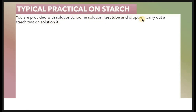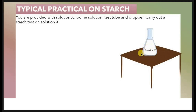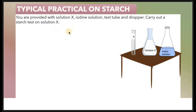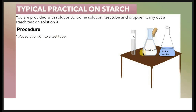In a typical practical on starch, you are provided with solution X, iodine solution, a test tube, and a dropper, and asked to carry out a starch test on solution X. The procedure is the same approach: put solution X into a test tube, then add a few drops of iodine solution to the test tube using a dropper.